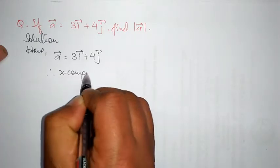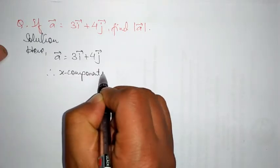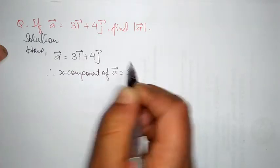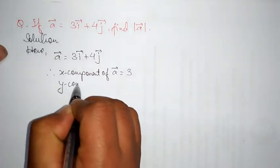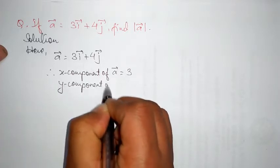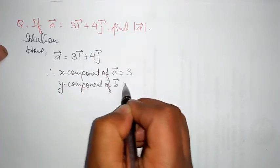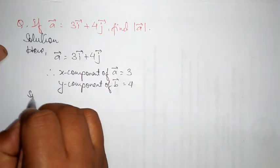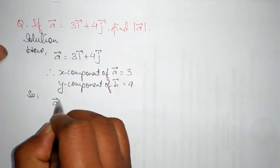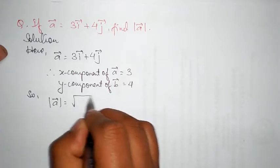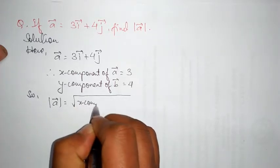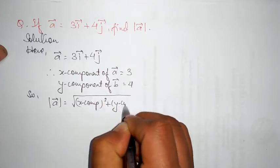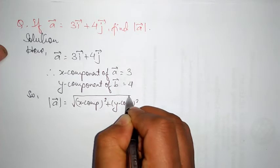The x component of vector a equals 3, and the y component of vector a equals 4. So, the magnitude of a vector is given by the square root of the x component squared plus the y component squared.